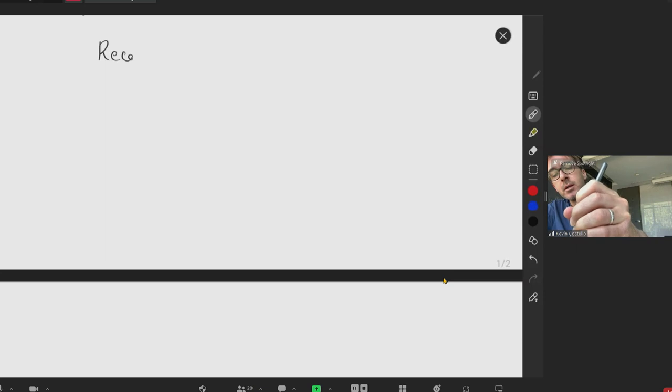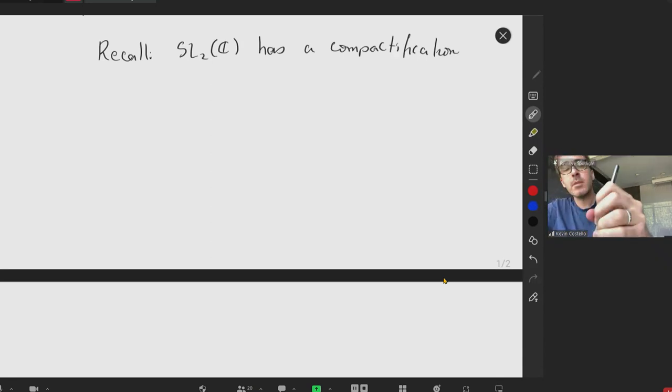So recall from yesterday that SL2C has a compactification where the boundary is CP1 times CP1.